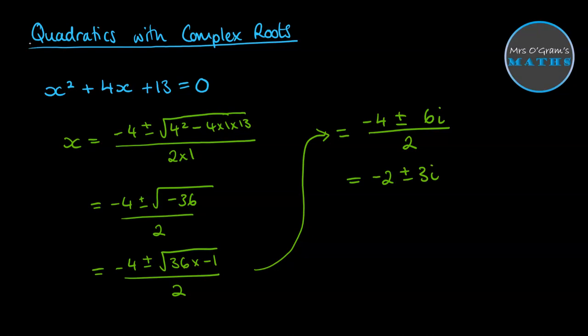And there you can see where we come out with the two roots as being the conjugate pairs. So we've got minus 2 plus 3i and minus 2 minus 3i. Roots of polynomials always come out in conjugate pairs like this.